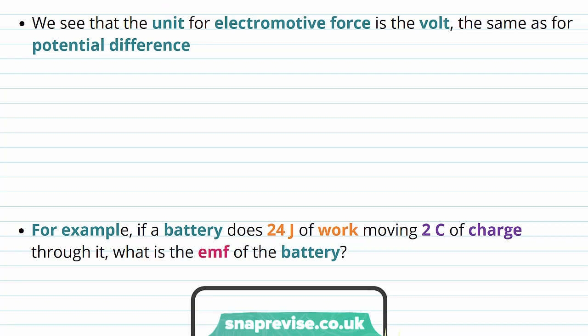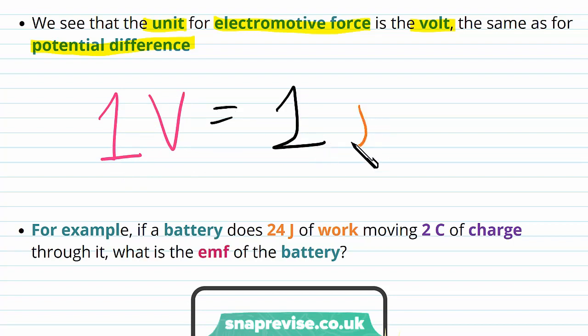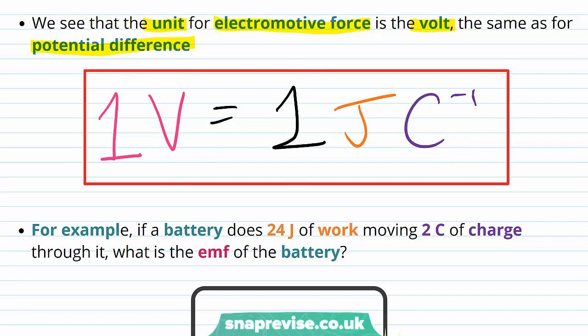Using this equation, we see that the unit of electromotive force is the volt, which is the same as for potential difference. One volt equals one joule per coulomb, which is what we get from this equation for EMF. This makes sense because we've defined EMF as work done per unit charge as the charge passes through the battery — and the potential difference is also work done divided by charge, but in this case it's the work done by the charge as it passes through a component. So both are essentially work done per unit charge, which is why both have the volt as their unit.